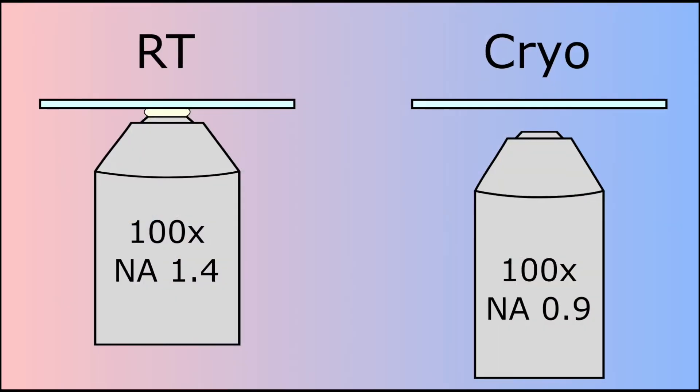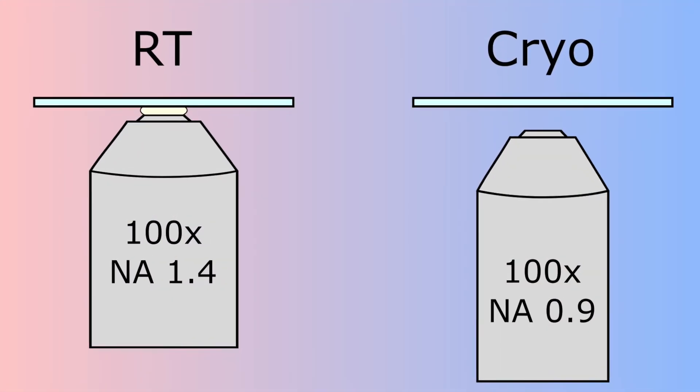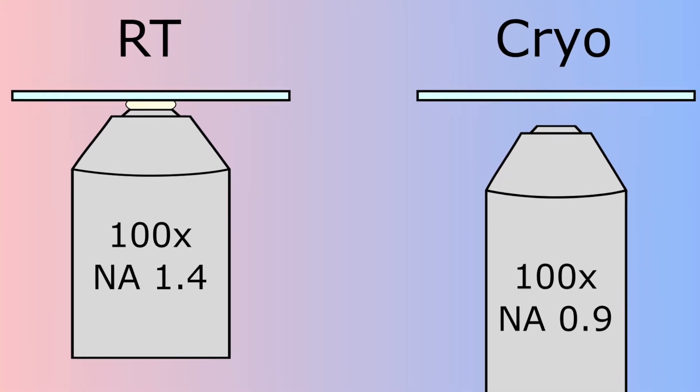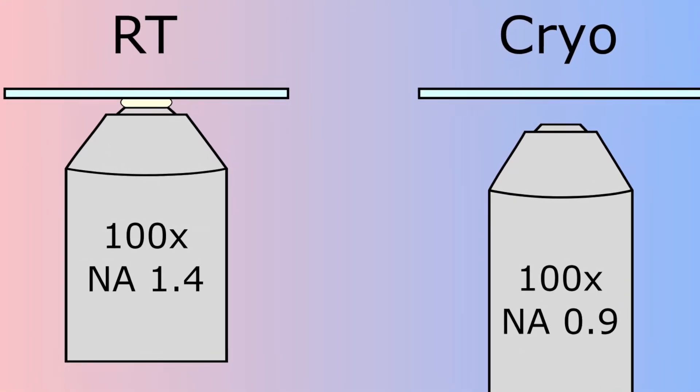In light microscopy, the high numerical aperture, or NA, of immersion objectives allows imaging at resolutions near the diffraction limit, at around 200 nm. In contrast, the air objectives used for cryofluorescence microscopy are limited to a lower NA and are therefore only able to reach resolutions of 400 to 500 nm.